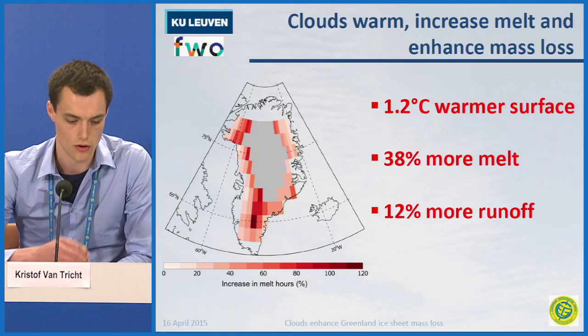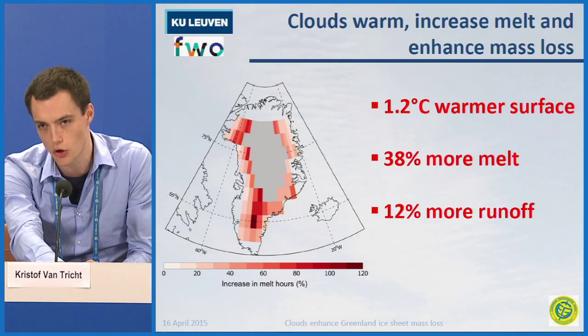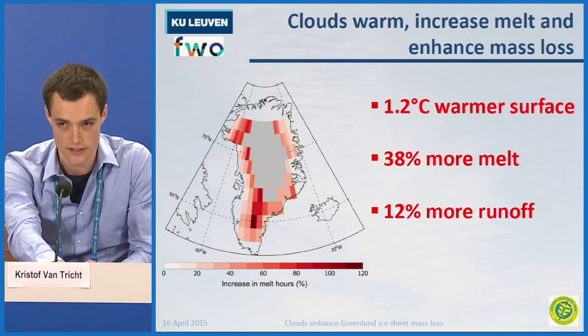This 12% corresponds roughly to 25 gigatons a year that we lose in excess solely due to the presence of clouds compared to when there would be no clouds over the ice sheet. Our results show the extremely large sensitivity of clouds on the surface mass balance. A logical question then is: what about the future? Are there going to be more clouds, less clouds? Will this impact increase or decrease?